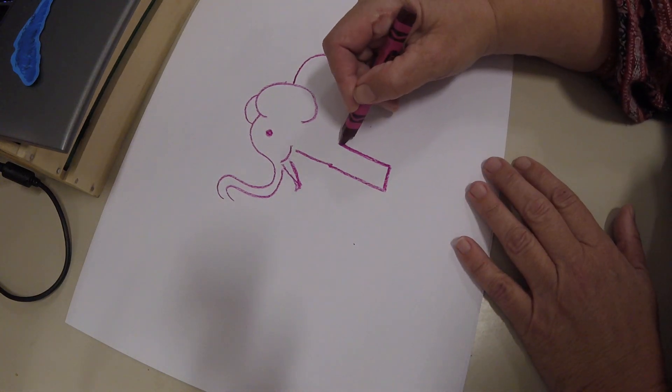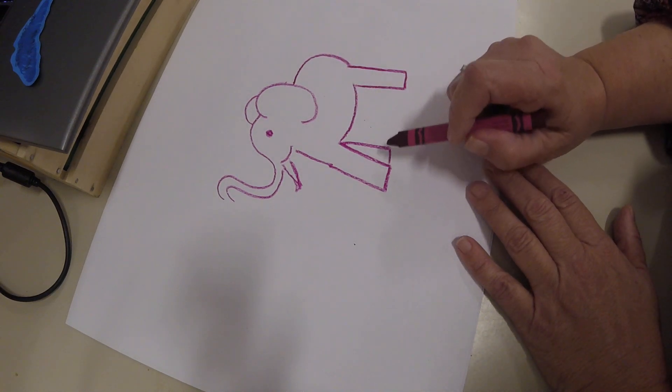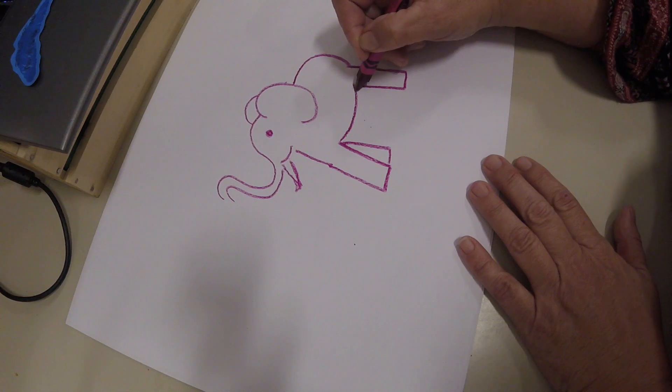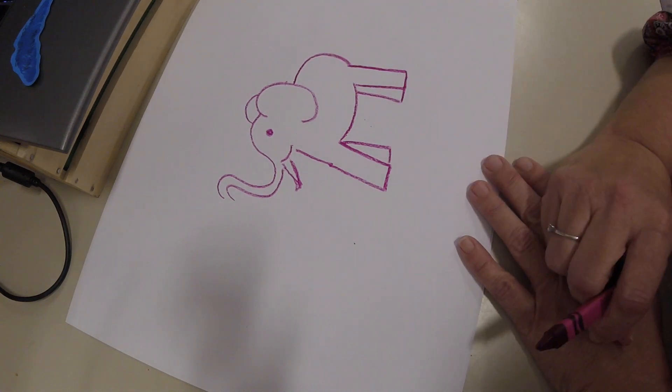Now you're going to add what looks like the backwards letter L right here, and that's going to make it look like your elephant has two legs in the front. And then you're going to come here and make a real letter L right there, and then it looks like it has two legs in the back.